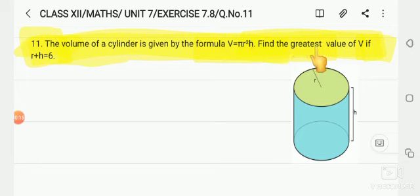You are asked to find the greatest value of V. Volume's greatest value needs to be found. If r plus h is equal to 6, radius plus height add up to 6. At that time, what is volume's greatest value? That's the question.